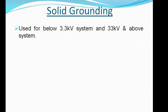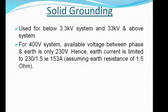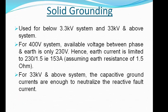Solidly grounding system: this method is used below 3.3 kV — that is, 400 V or 415 V systems — and at 33 kV and above systems such as 400 kV or 765 kV. For 33 kV and above, the capacitive ground currents are enough to neutralize the reactive fault current. For the 400 V system, the available voltage between phase and earth is only 230 V. The earth resistance of the earth plate, ring connections, etc. is of the order of 1.5 ohms, hence the earth current is limited to 230 V divided by 1.5 ohms, which equals 153 amperes, without any grounding resistance requirement. Hence this system is effectively or solidly earthed.